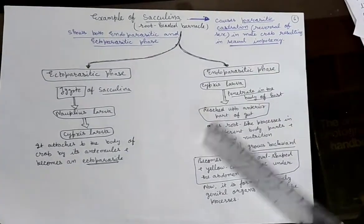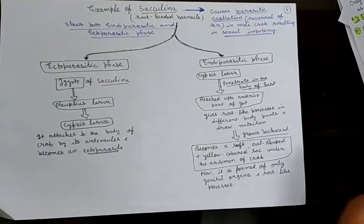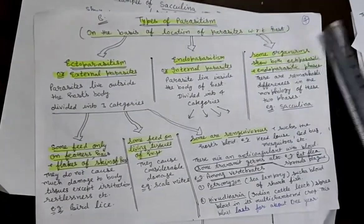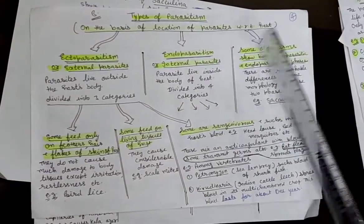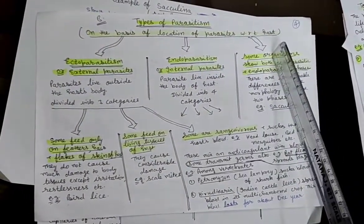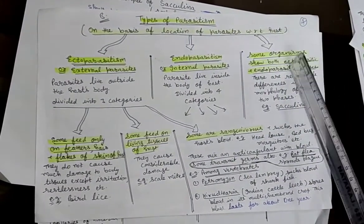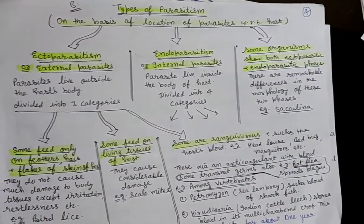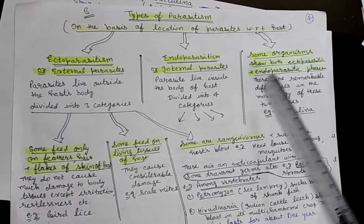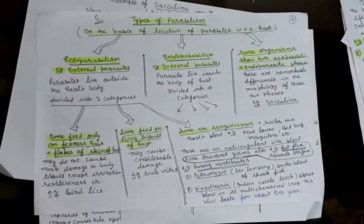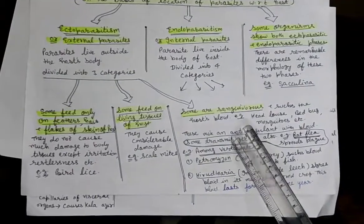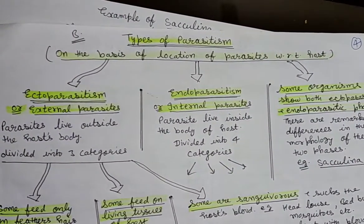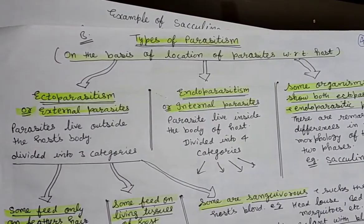Now I think you can better understand the second type of parasitism, which is based on the location of parasites with respect to the host — where those parasites are found in the host's body. On this basis, the types of parasitism are ecto, endo, and both ecto and endo. This was our second lecture for chapter number 2, covering the second type of parasitism. In our next lecture we will study the third type of parasitism. Okay students, bye.